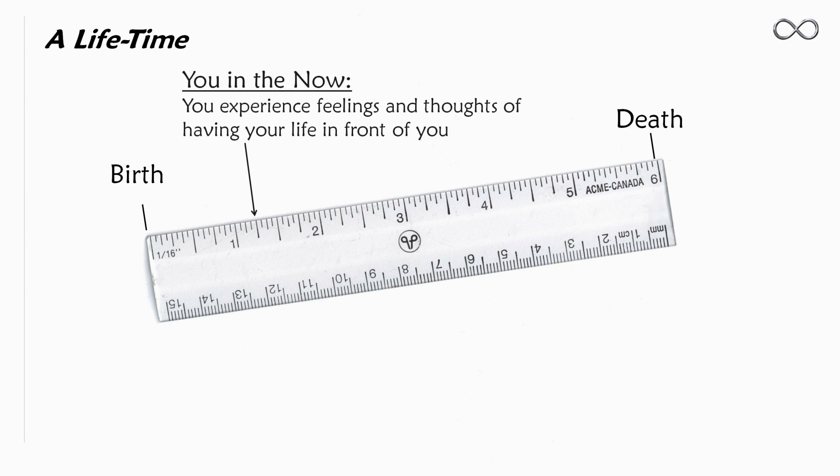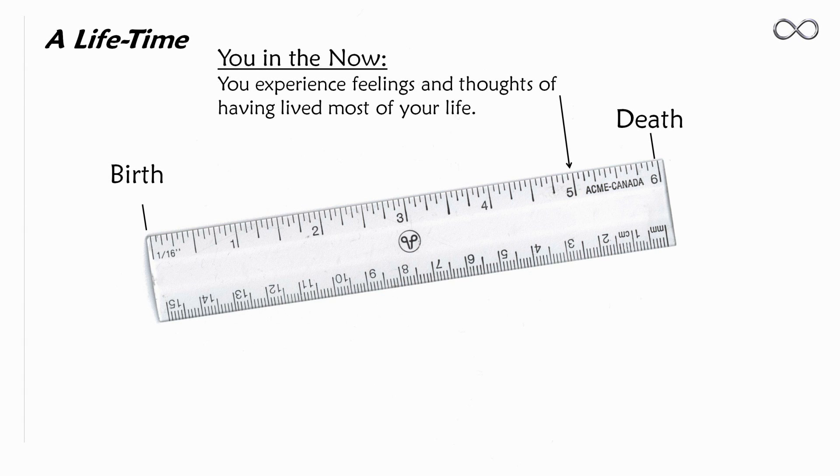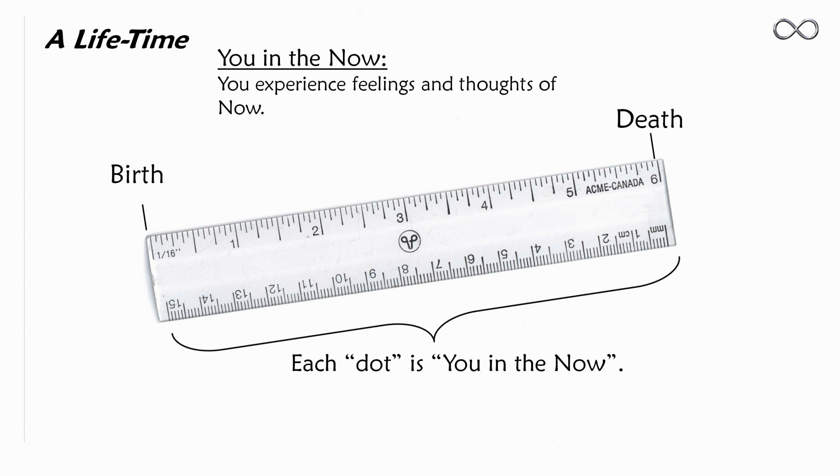And when you're young, you most commonly experience feelings and thoughts of having your life in front of you. And when you're older, you experience feelings and thoughts of having lived most of your life. The strange thing is that each arrow you could possibly draw is you experiencing feelings and thoughts of what is. So each dot you could point at is you in the now.